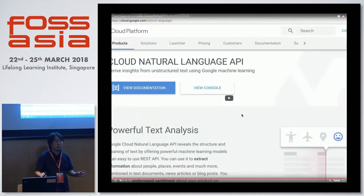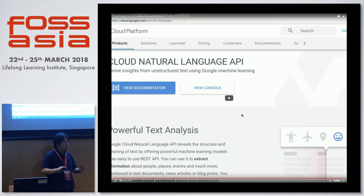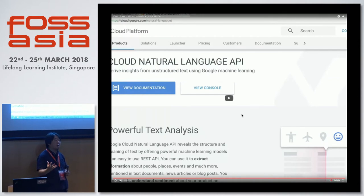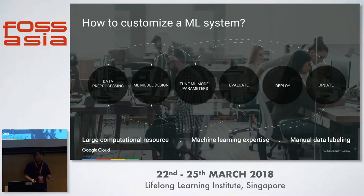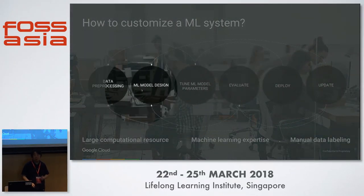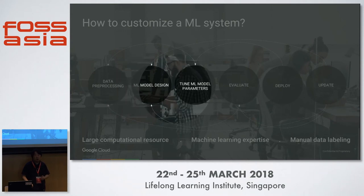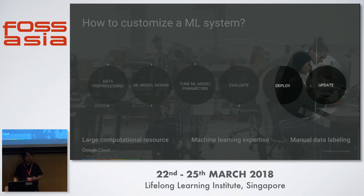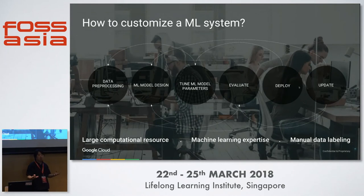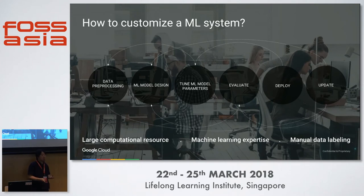That's so easy — you don't have to hire expensive data scientists. But these APIs cannot solve all problems, because they are pre-trained models and you cannot customize them for your own use cases. To do so, you'd have to hire expensive data scientists to handle data pre-processing, design the ML model, tune hyperparameters, evaluation, deployment, and continuously monitor and retrain the model — which would cost tens of thousands to millions of dollars.